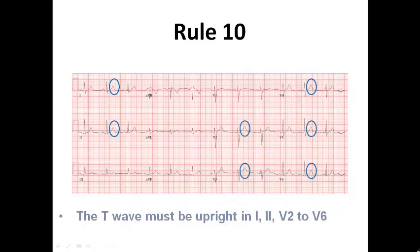Rule number ten states that the T-wave must be upright in lead one, lead two, and from V2 to V6. This is logical because the QRS complex in lead one and lead two is predominantly positive, so the T-wave would also be positive. As mentioned in the ECG interpretation lecture, the T-wave starts to be positive from V2 and continues to be positive through V6.